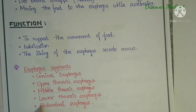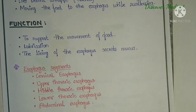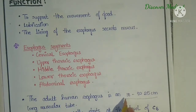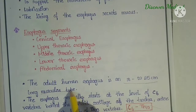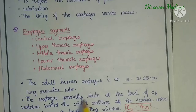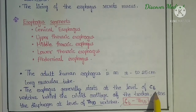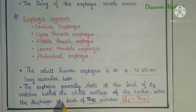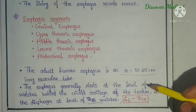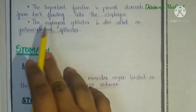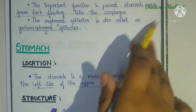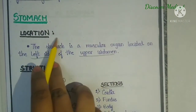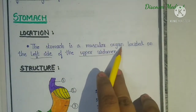The esophagus segments are: cervical esophagus, upper thoracic esophagus, middle thoracic esophagus, lower thoracic esophagus, and abdominal esophagus. The adult human esophagus is an 18 to 25 centimeter long muscular tube. It generally starts at the level of cervical vertebra 6, behind the cricoid cartilage of the trachea, and enters the diaphragm at the level of thoracic vertebra 10. The lower end is also called the gastroesophageal sphincter.